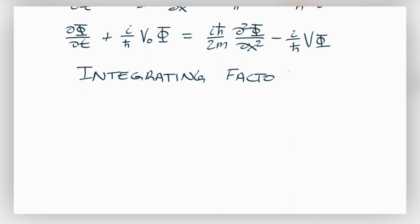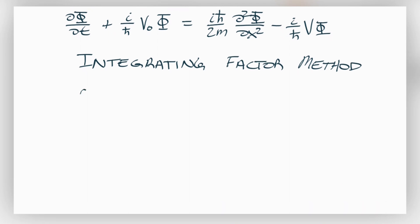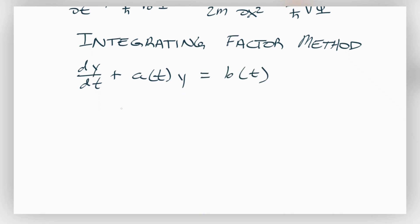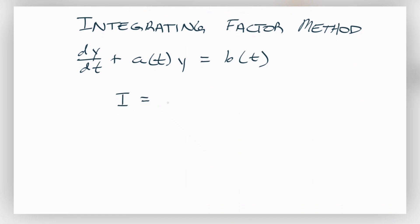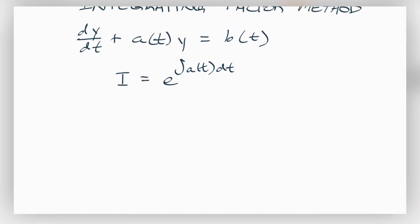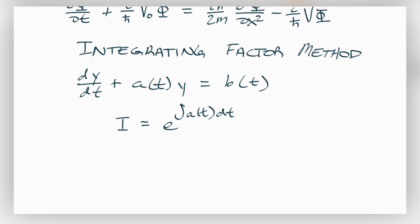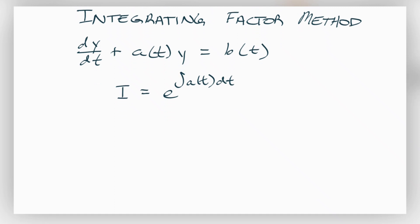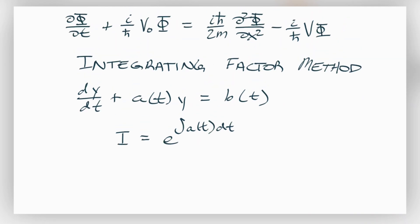The integrating factor method tells us there's an easy way to solve a differential equation of this form: dy/dt plus some a(t) times y equals b(t). When we have something of this form, the integrating factor I is equal to e to the integral of a(t) dt. We multiply that integrating factor on both sides, and that simplifies our differential equation so we can solve it.